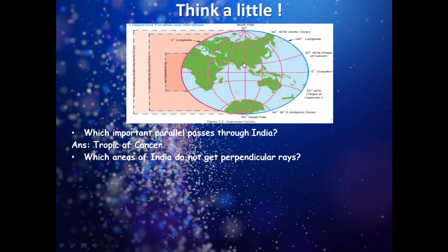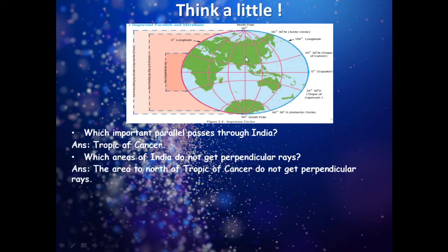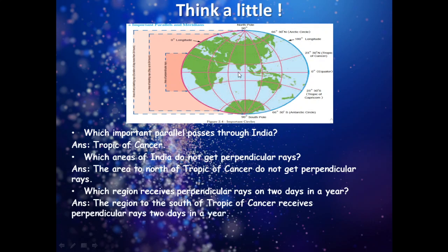Which areas of India do not get perpendicular rays? The areas between 23 degrees 30 minutes north and south of the equator receive perpendicular rays. The area above the Tropic of Cancer — that is, to the north of the Tropic of Cancer — will not receive perpendicular rays. Which region receives perpendicular rays on two days in a year? The region to the south of the Tropic of Cancer receives perpendicular rays two days in a year. We will learn this in depth in 7th standard, but due to revolution and rotation of the earth, the peninsular region of India receives proper 90-degree rays twice in a year.